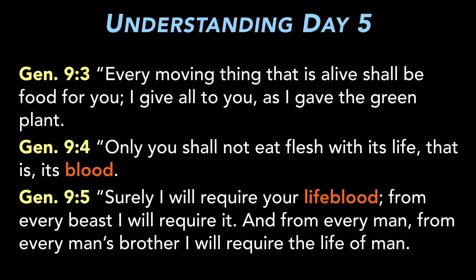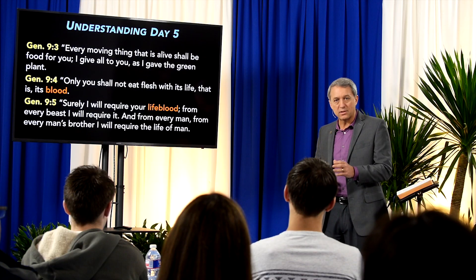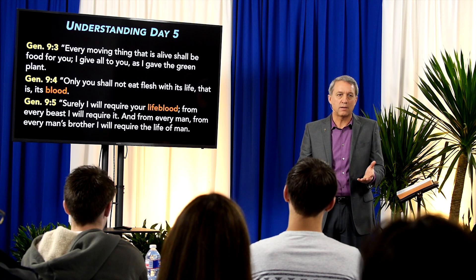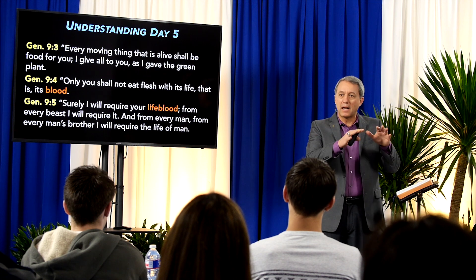God uses this in a variety of ways. Later in Genesis, after the flood, God says to mankind: 'Every moving thing that is alive shall be food for you; I give all to you as I give the green plant. Only you shall not eat flesh with its life, that is its blood. Surely I will require your lifeblood from every beast; and from every man, from every man's brother, I will require the life of man.' In this passage, God establishes a new rule — if someone takes the life of another, they themselves should lose their life as a penalty.